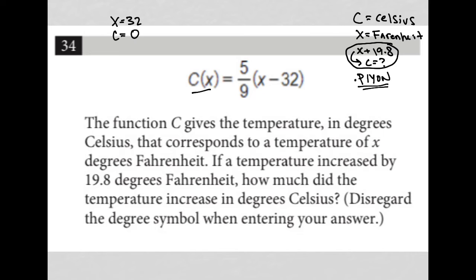Now I redo this process and say, well, what happens then when I add 19.8? So 32 plus 19.8 is 51.8. So when X equals 51.8, if I replace this X with 51.8, 51.8 minus 32 is 19.8.